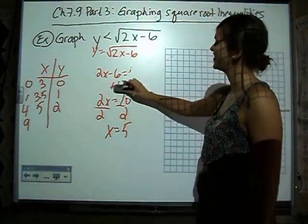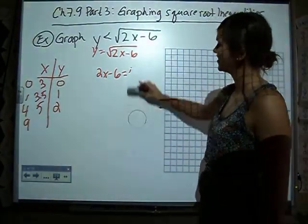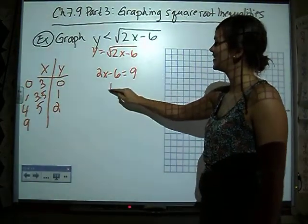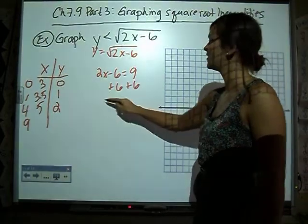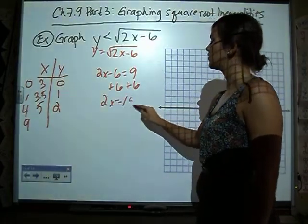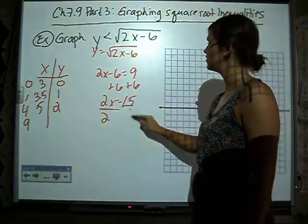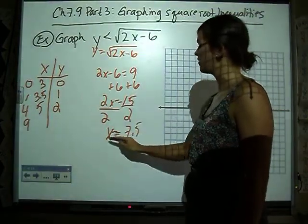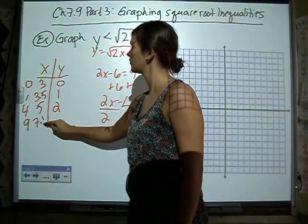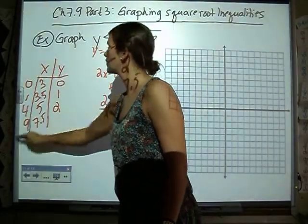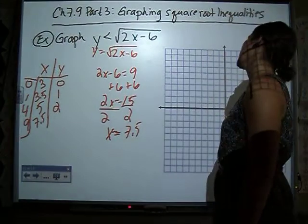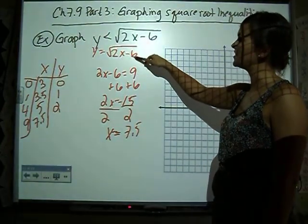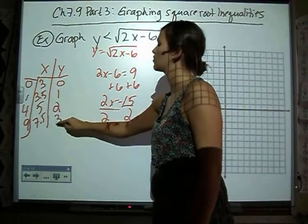Can you guess what the last one will be? At least the last y value. If we let it equal 9, add 6, 2x equals 15, divide by 2, that is going to be 15 halves, or 7.5. If we put in 7.5 here, 2 times 7.5 is 15, minus 6 is 9, square root of 9 is 3.